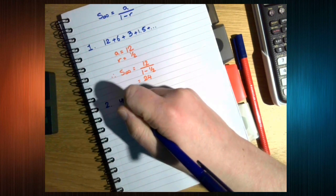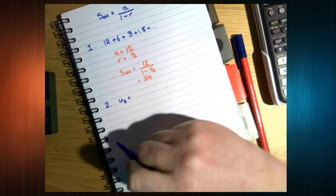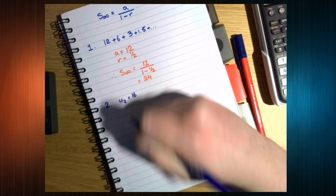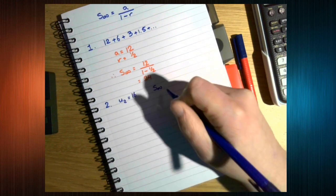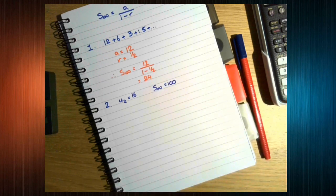We know the second term is 16, and we know the sum to infinity is 100. We want to find the two possible values of r, and the first terms that correspond to those.